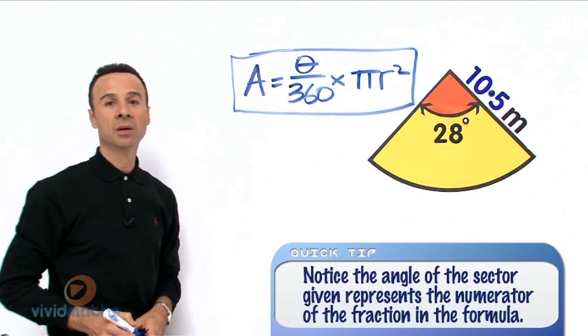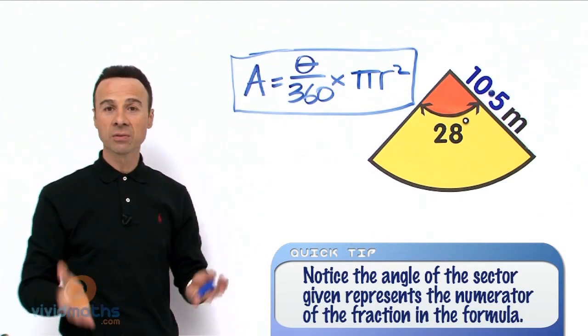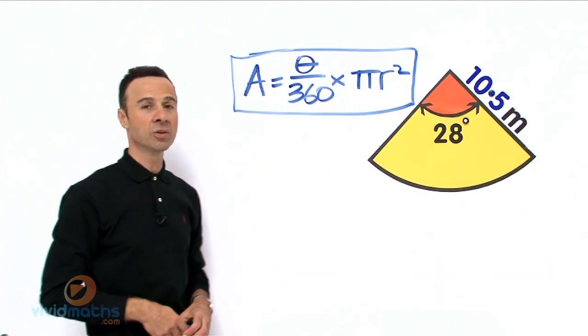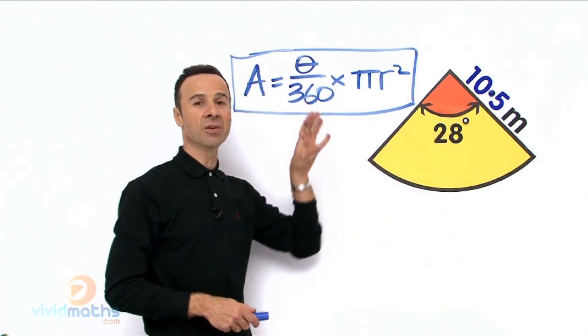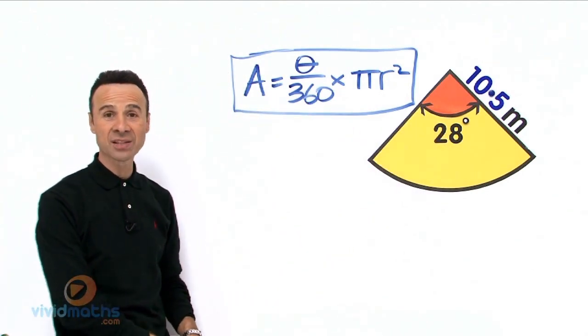That is the area of a fraction of a circle—that is the formula. So all we need to do is plug these numbers into there and come up with the correct answer, so let us do that now.